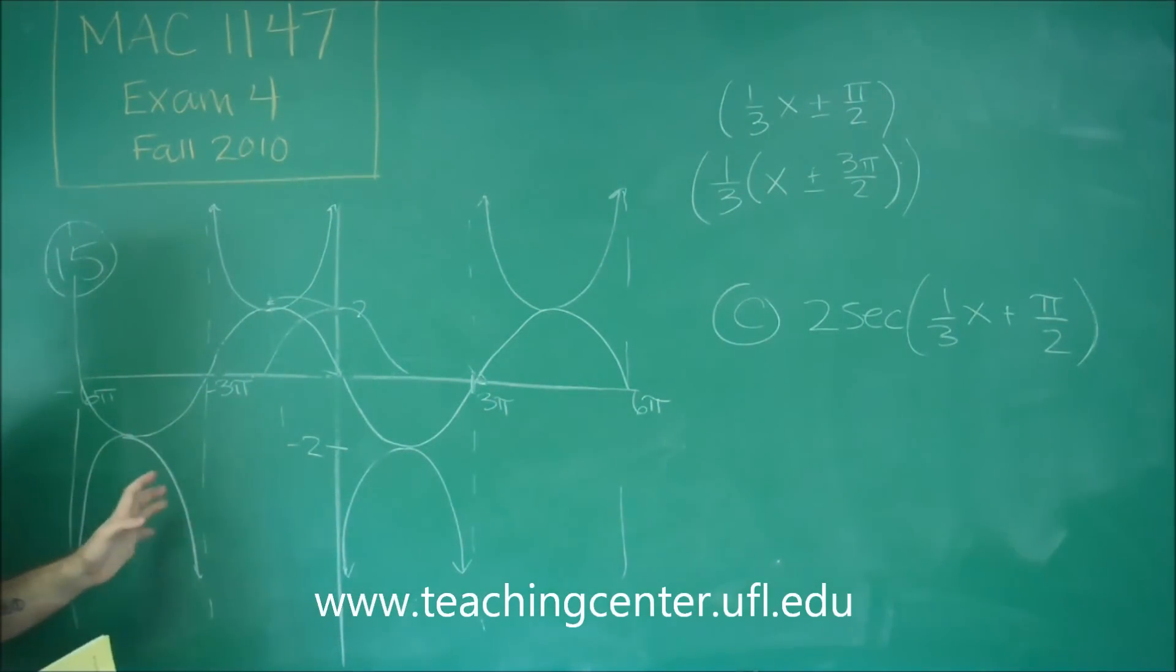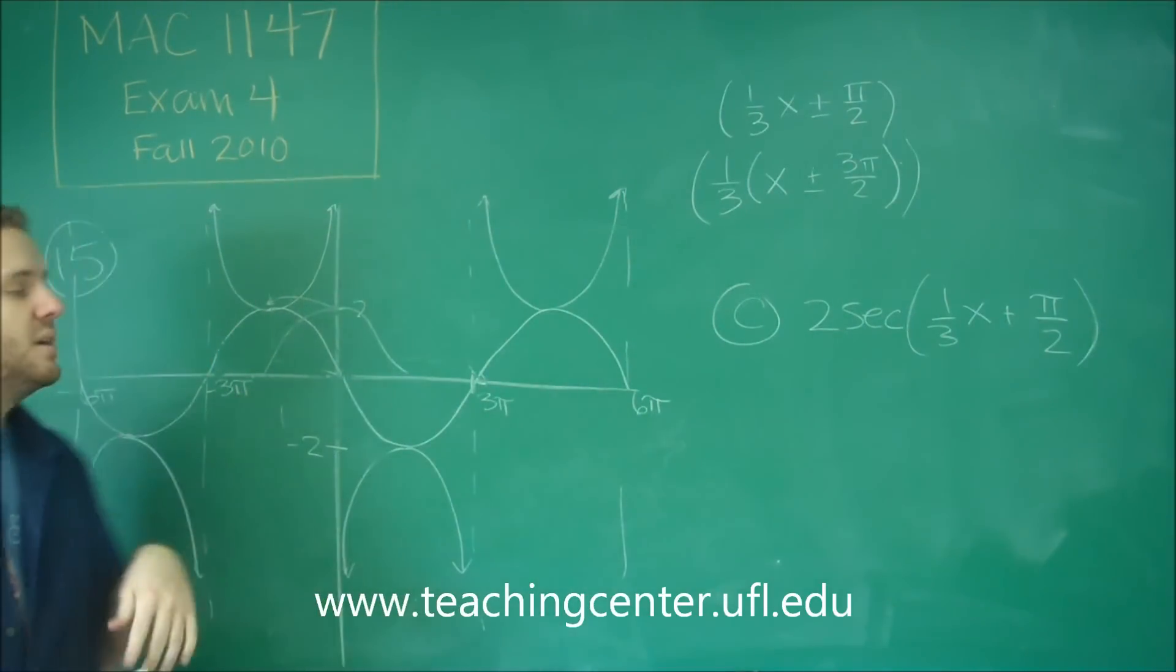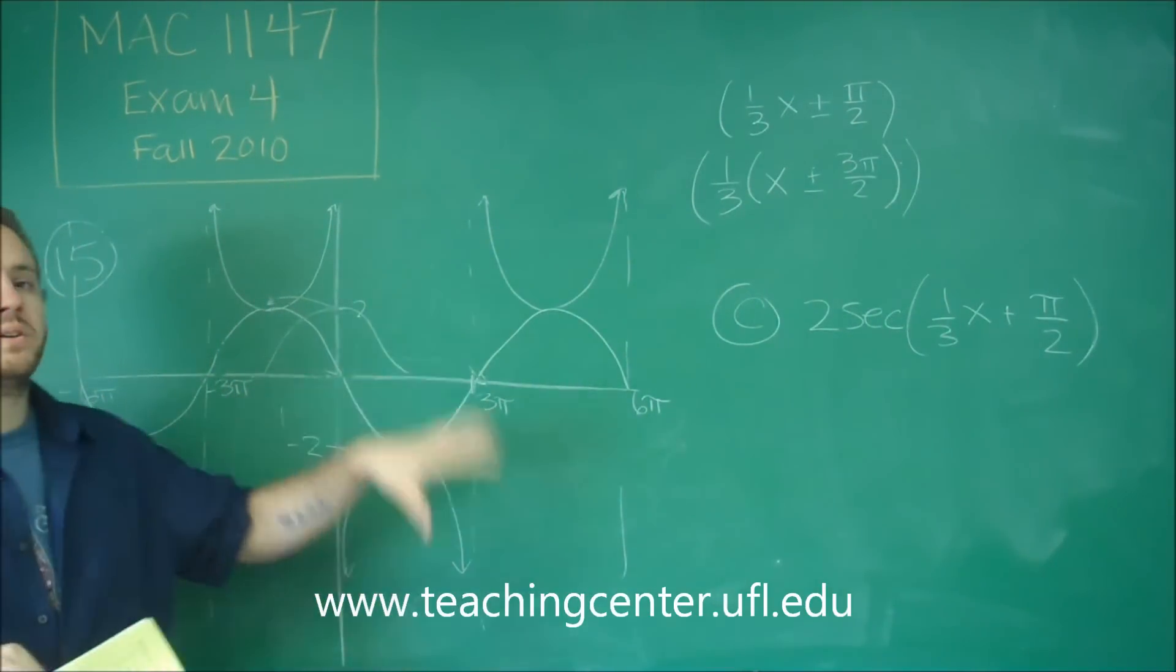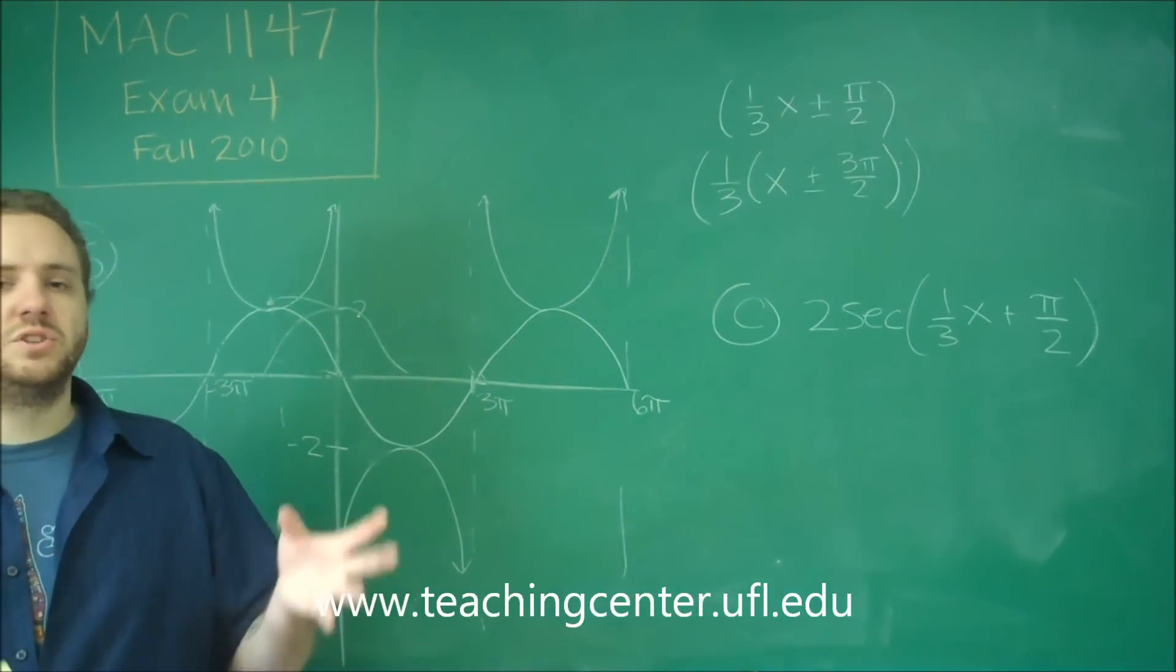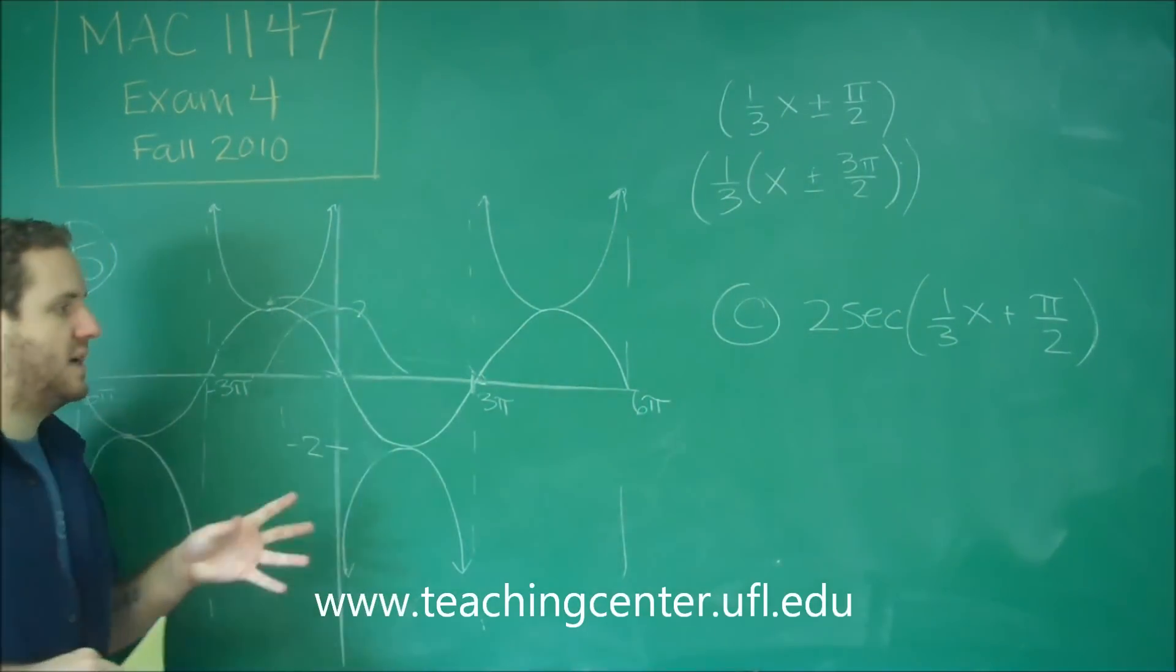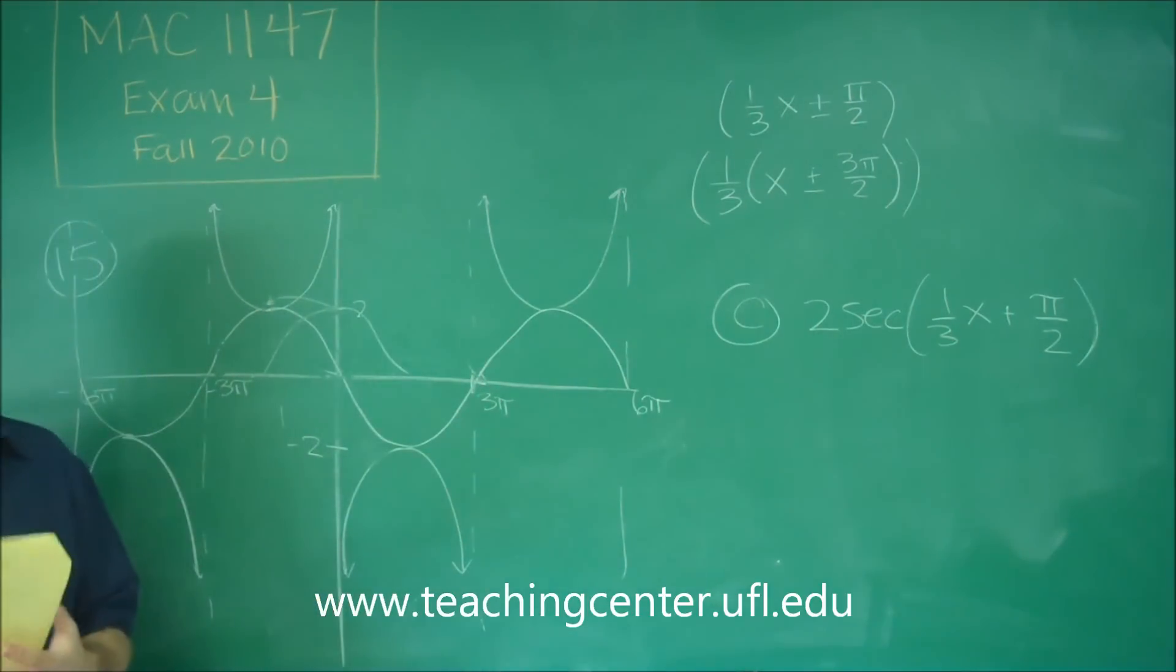So my suggestion to you is on these graphs, especially if you get ones that are secants and cosecants, think of it as the sine or cosine graph that goes with them, because that's less stuff for you to remember. If you can just convert it basically to a sine and cosine problem, you only need to memorize those two graphs and how they shift.